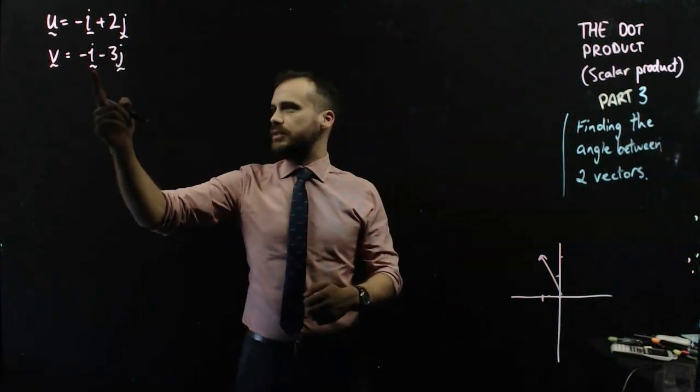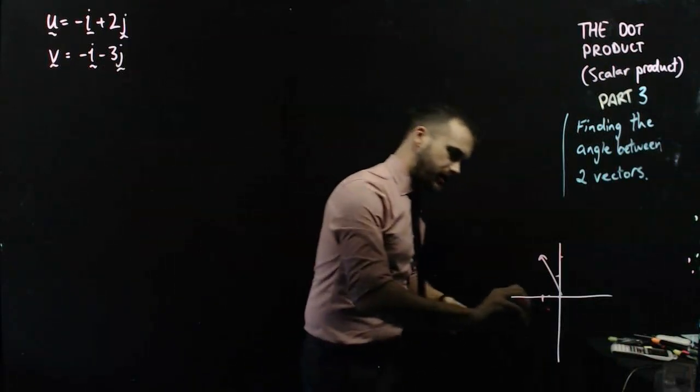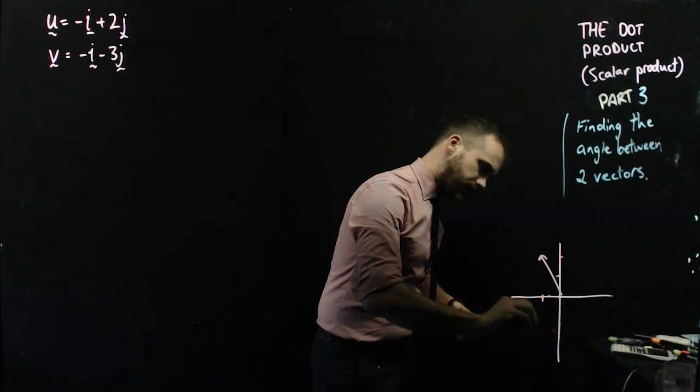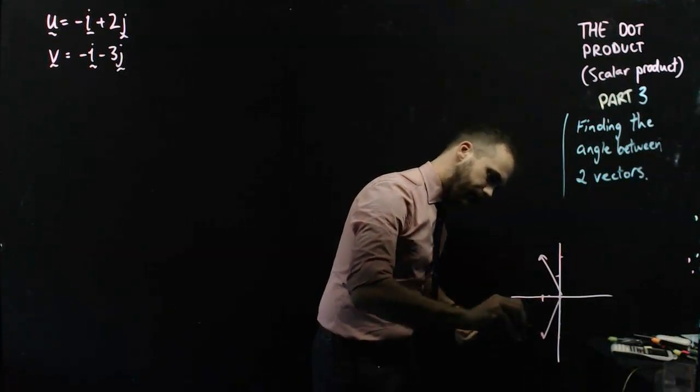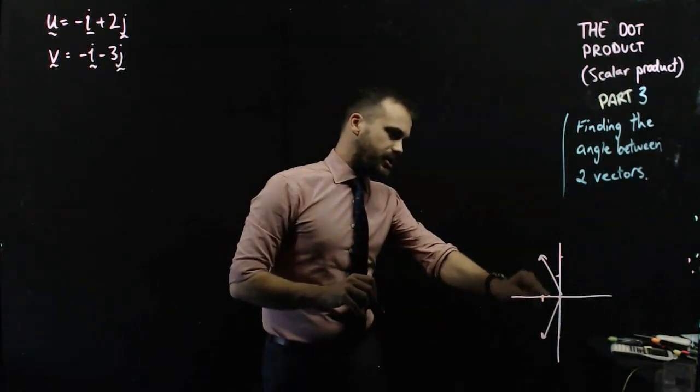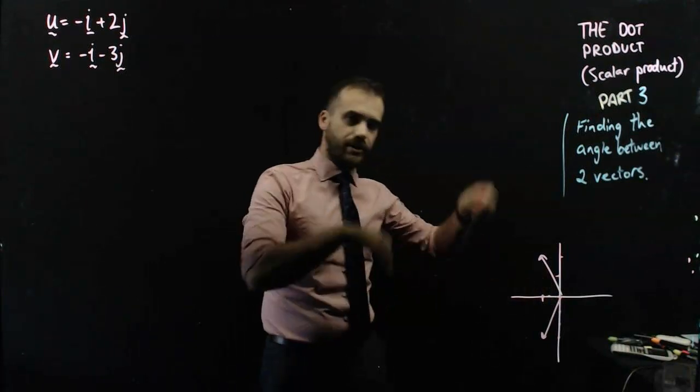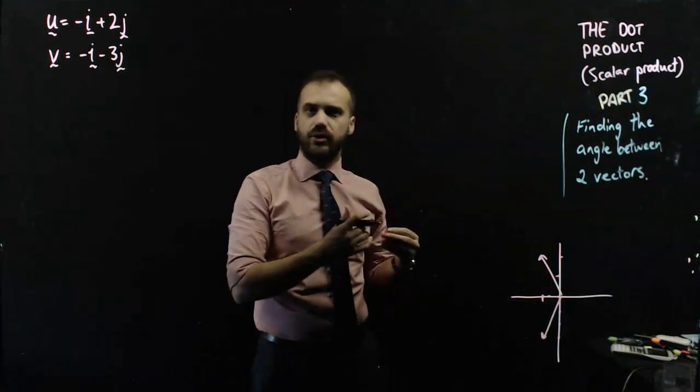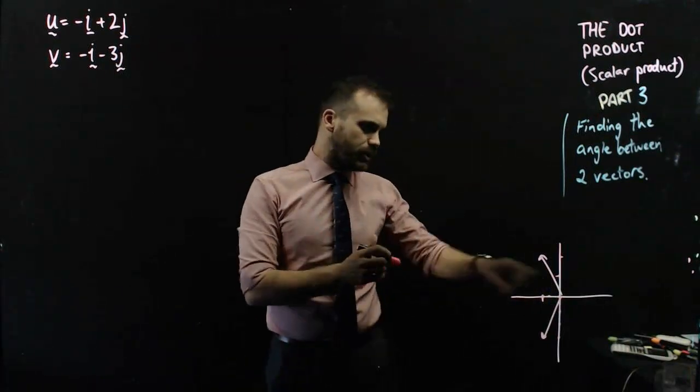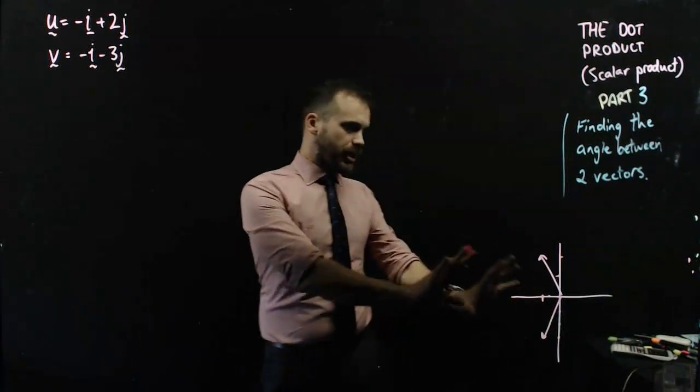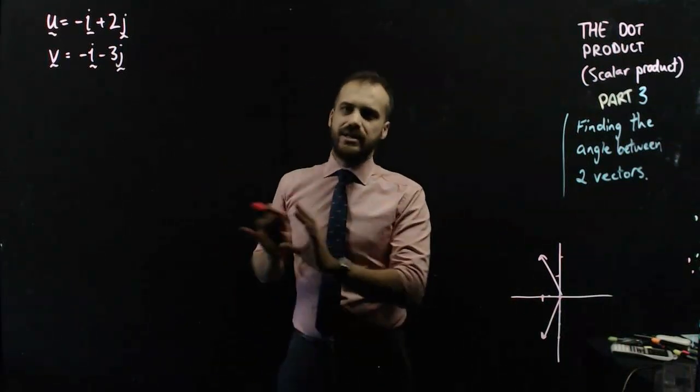This next one is negative i minus 3j, so that next vector looks like that. I imagine my angle is going to be bigger than 90 degrees, maybe like 150, 140, 130, something like that. That's what it looks like to me. So that's my rough idea, but now I'm going to find the exact answer.